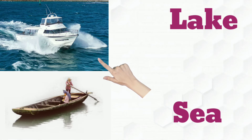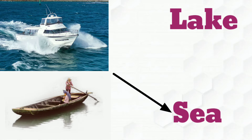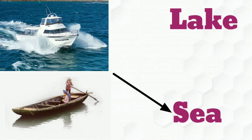See the third picture — ship. Tell me students, where does the ship move? Yes, it moves on the sea. So we have to connect the ship to the sea. Students, see the fourth picture — kattamaran. Where does the kattamaran move? Yes, it moves on the lake. So we have to connect the kattamaran to the lake.